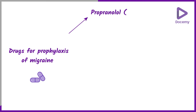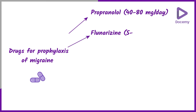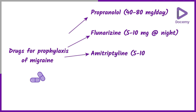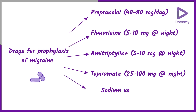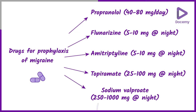Propranolol 40 to 80 mg per day. Flunarizine 5 to 10 mg at night. Amitriptyline 5 to 10 mg at night. Topiramate 25 to 100 mg at night and sodium valproate 250 mg to 1 gram at night.